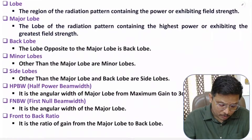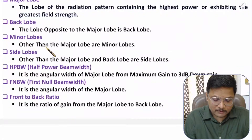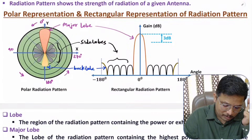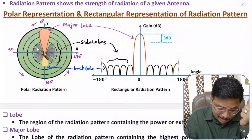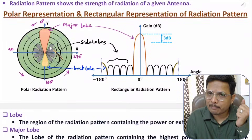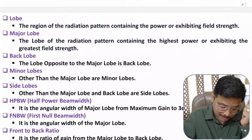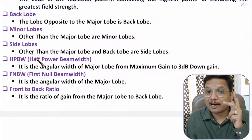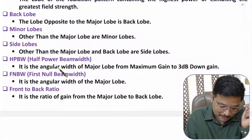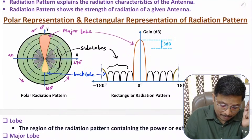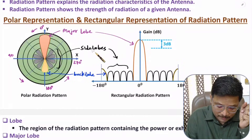Minor lobes are all lobes other than the major lobe. So the combination of side lobes and the back lobe constitutes the minor lobes. Side lobes are specifically those lobes other than the major lobe and the back lobe. In the diagram, the side lobes are shown in black color.